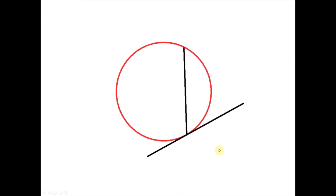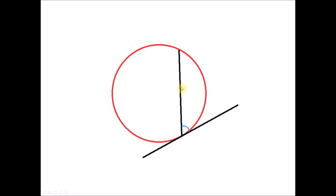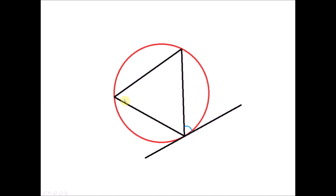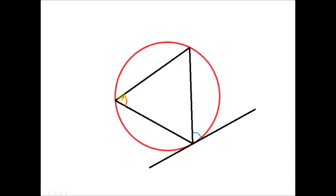Looking at the second diagram: we have a chord forming an angle with the tangent (blue angle). Drawing two lines in the alternate segment forms another angle subtended by the same chord. The angle between the chord and the tangent equals the angle in the alternate segment subtended by the same chord — these two angles are equal.